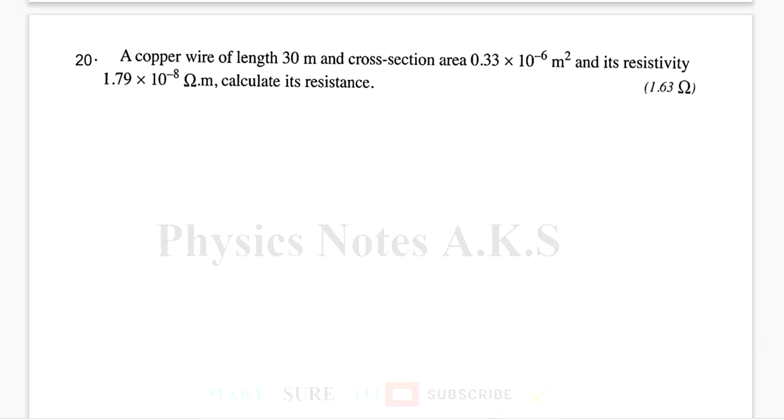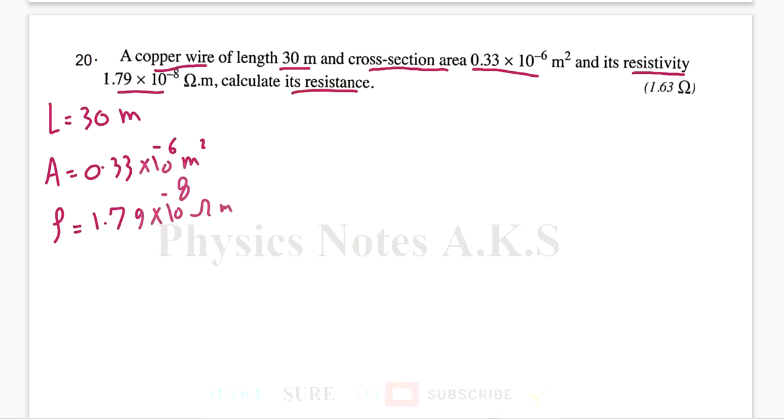This question says: a copper wire of length 30 meters and cross-section area 0.33 × 10^-6 m², and its resistivity is 1.79 × 10^-8 ohm-meter. They say calculate its resistance.